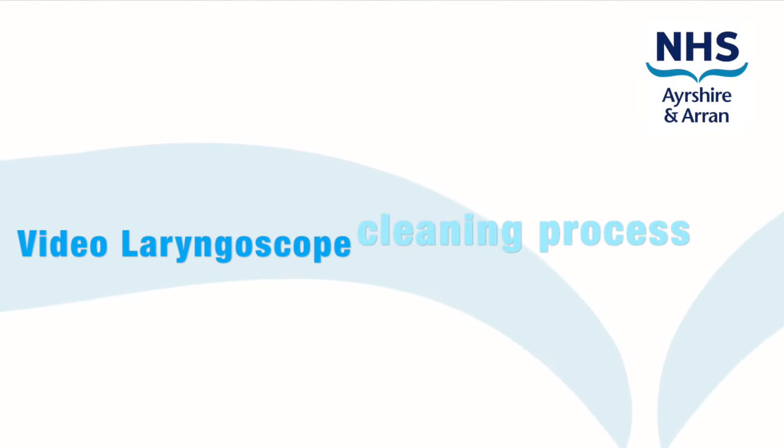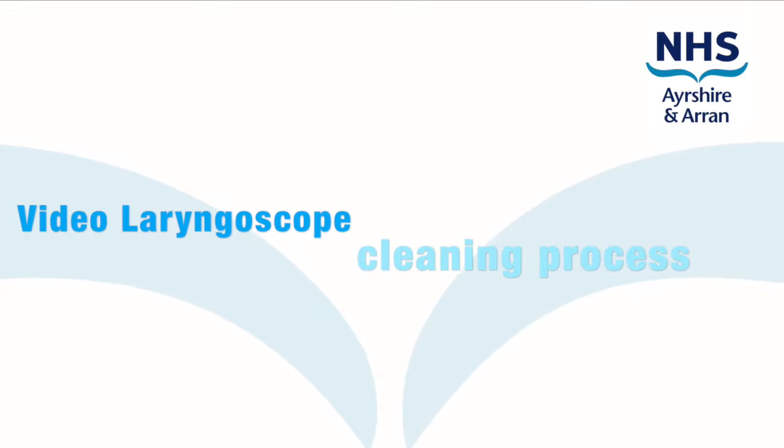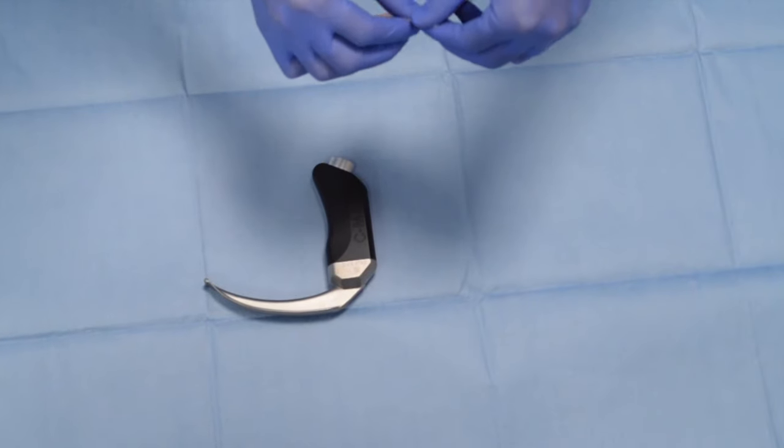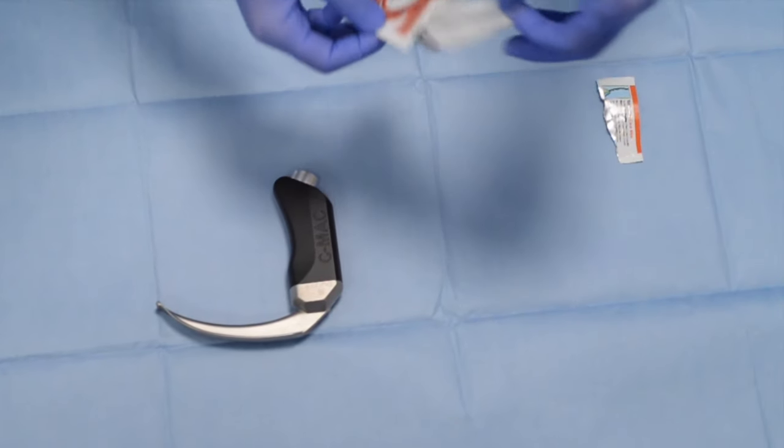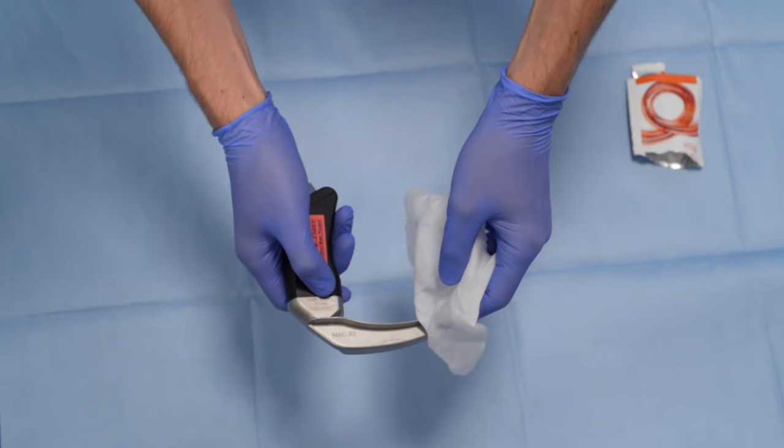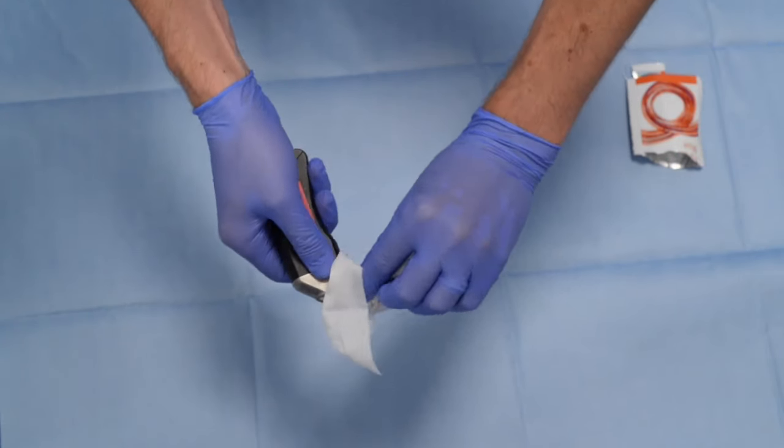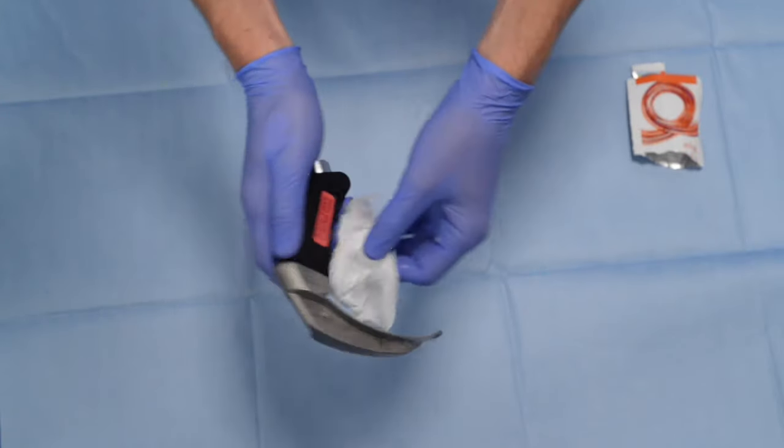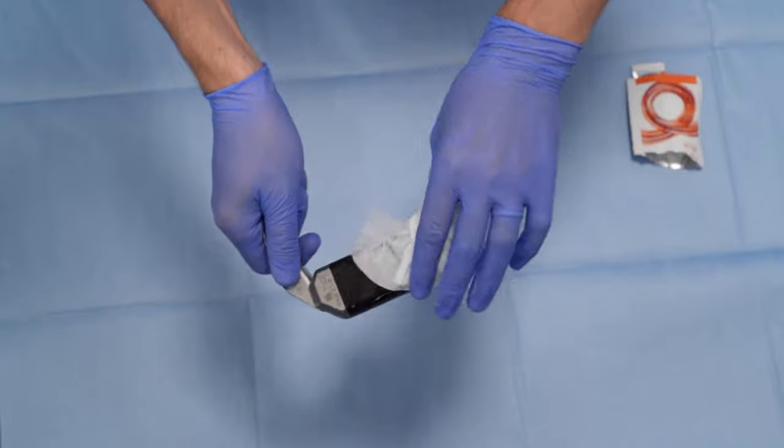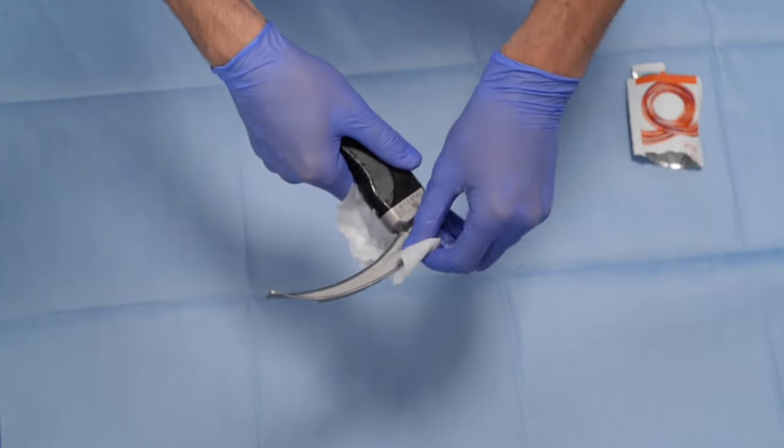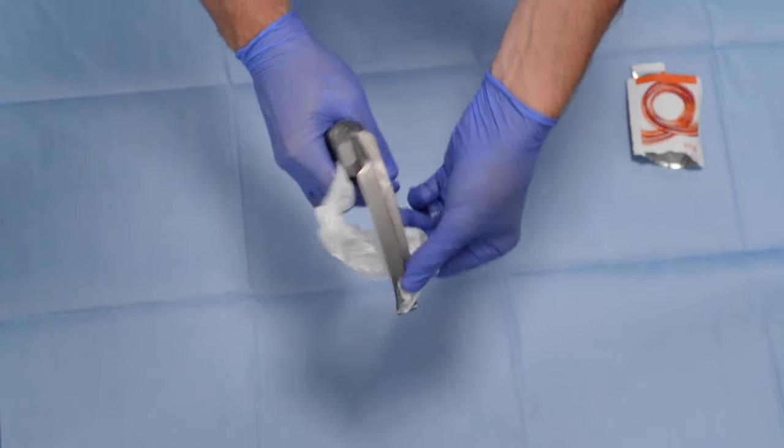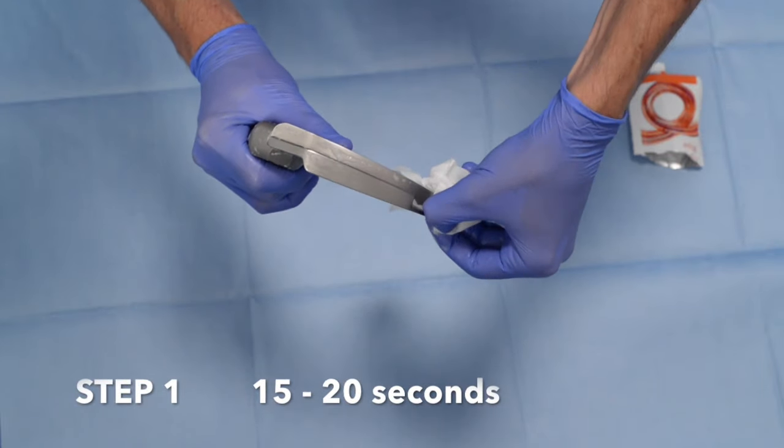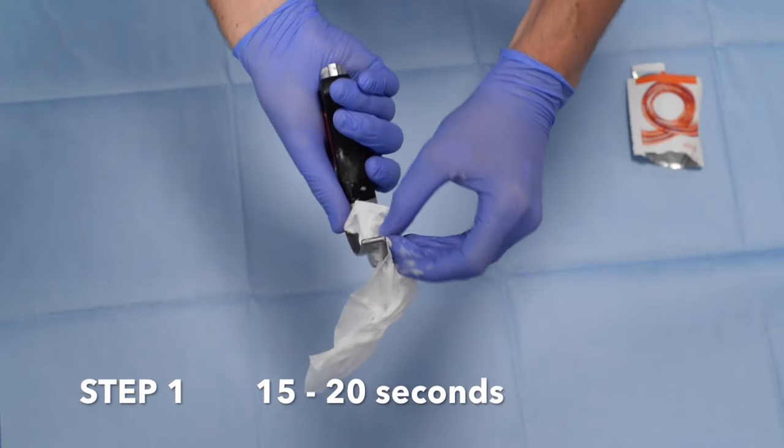To start the cleaning process, remove any obvious contamination with running water. Then you're ready for wipe number 1. This is a pre-clean. Make sure all the blade is wiped down and the handle. Take particular care around the small clips. Do this for about 15 to 20 seconds.